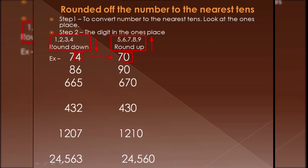The next example is 86. Here the one's place is 6, which is greater than 5, so we add one to the tens place. That means 8 plus 1 becomes 9, and the one's place becomes zero. So 86 is rounded up to 90.